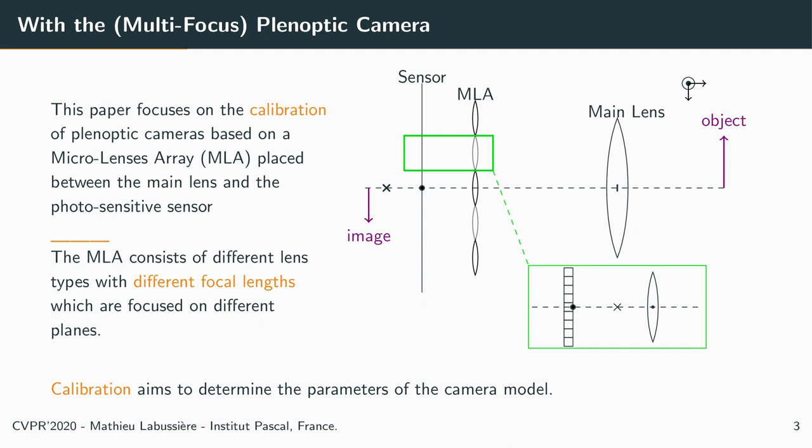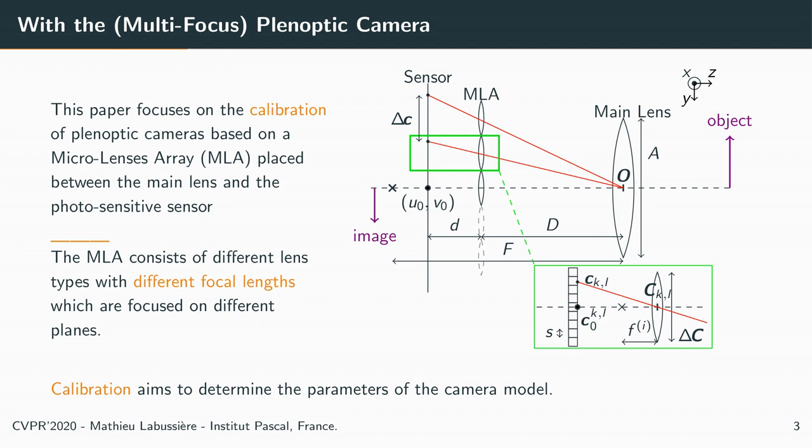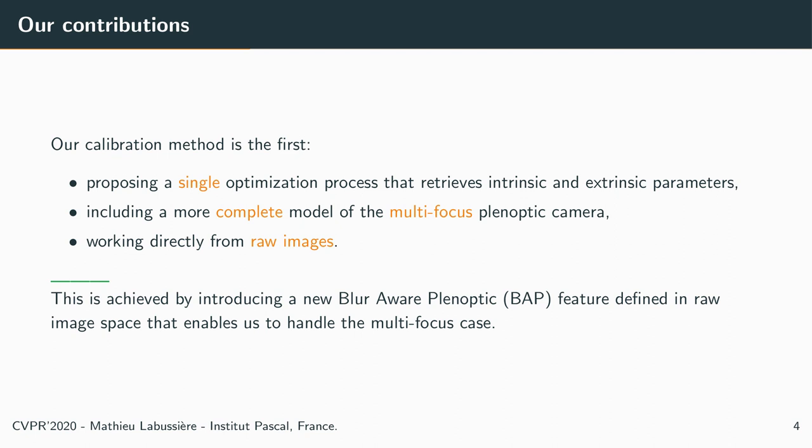To determine the parameters of the camera model, we need to calibrate the camera. To the best of our knowledge, our calibration method is the first proposing a single optimization process that retrieves intrinsic and extrinsic parameters of a more complete model of the multi-focus plenoptic camera, including the multiple micro-lens focal lengths, and this directly from raw images.